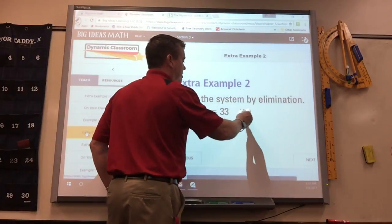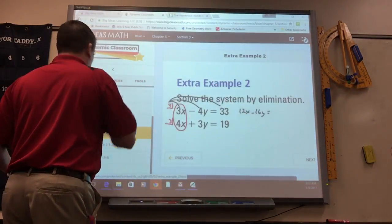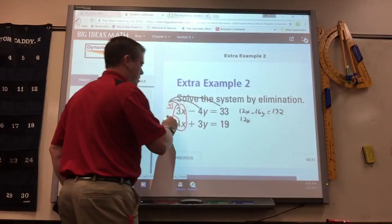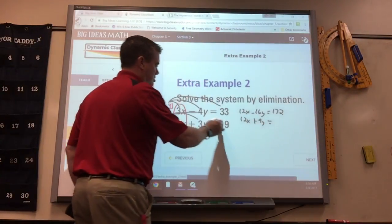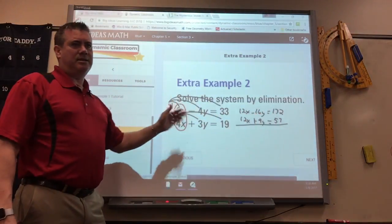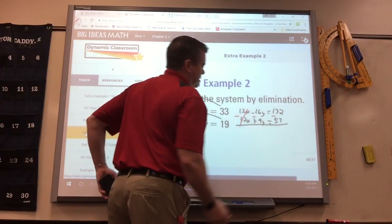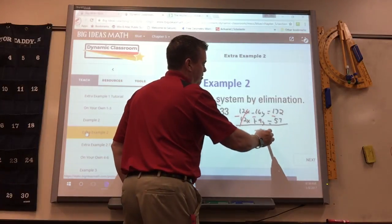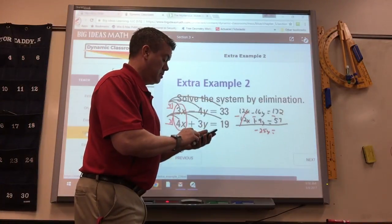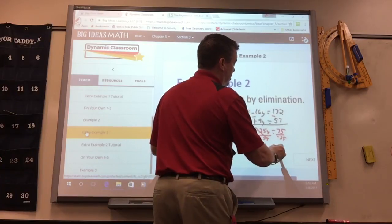So this would become 12x minus 16y equals 32. This would be 12x plus 9y equals 57. So I didn't change the value of them because I did the same thing to everything. So now when you add or subtract get rid of the x's. Subtract. When you subtract this, you get negative 25y equals 75. So divide by negative 25 and you get negative 3.